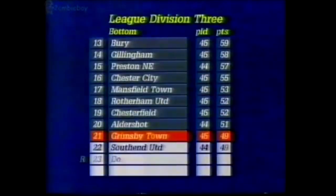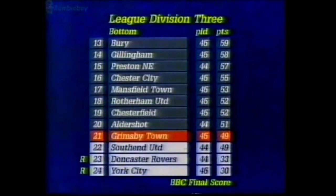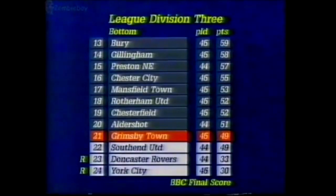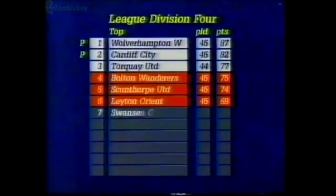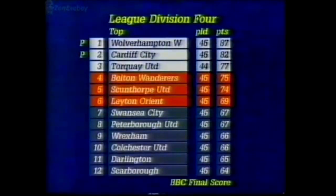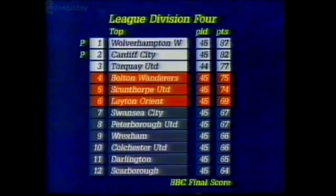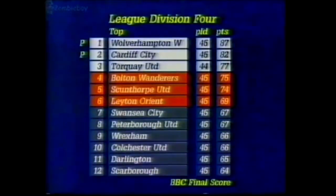That's the bottom of Division 3. York and Doncaster are already down. Southend play tonight. Grimsby helped their chances of survival with a 1-0 win at Wigan. And Wolves, the fourth division champions — another two goals from Steve Bull taking his total for the season to 52, giving them a 2-0 win over Hartlepool. Cardiff join them in the third division next season after their 2-0 win over Crewe. Torquay are favourites for the third promotion spot after their win at Halifax.